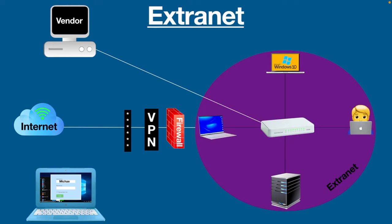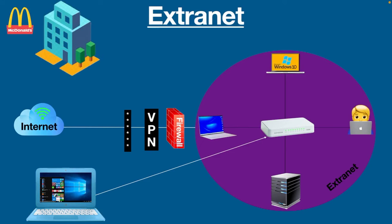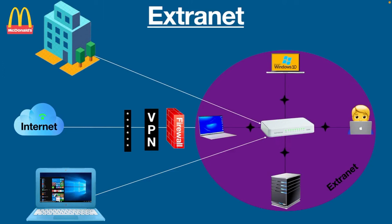He gets a username and password from the administrator, and by entering that information, he gains access to the university's extranet. Here is another example: a company like McDonald's has opened a branch in a different city. In order to communicate, the new branch needs login details to access the extranet. Once they get the login details from the admin, they can start communication. Similarly, vendors, suppliers, partners, and customers can access the network.